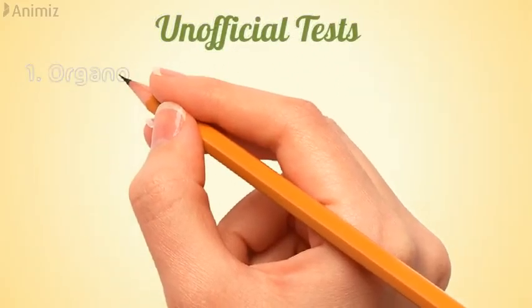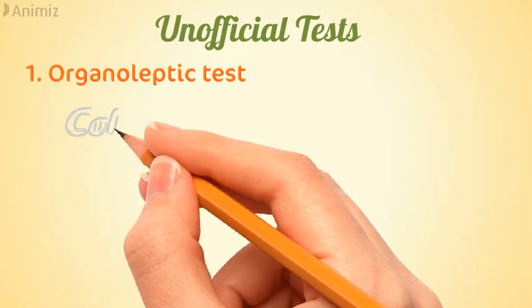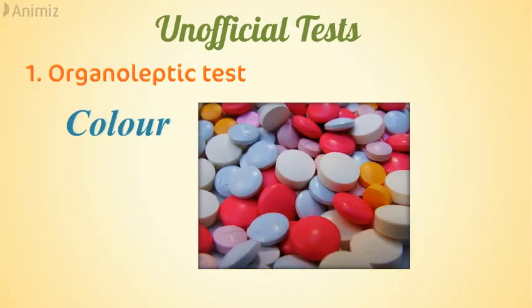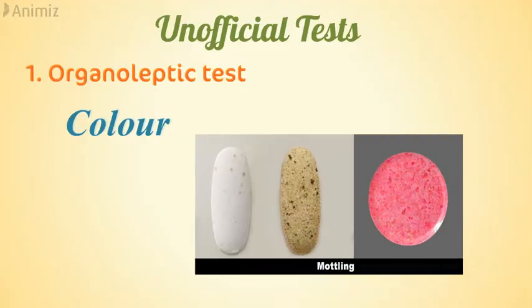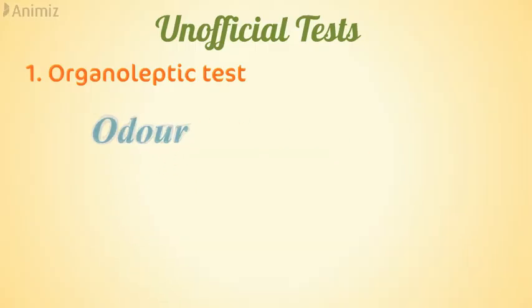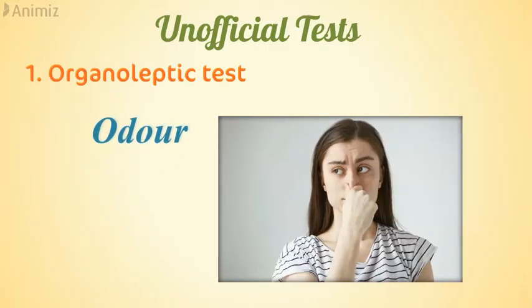The first unofficial test is the organoleptic test. Color in a tablet is used for rapid identification and customer acceptance; it should be uniformly distributed with no sign of mottling, which is non-uniformity of color. The presence of odor from a batch of tablets could indicate instability, so there should be no odor.